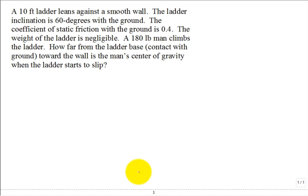A 10-foot ladder leans against a smooth wall. The ladder is 10 feet long and leans against the wall. The inclination is 60 degrees with respect to the ground, so this angle theta is 60 degrees.